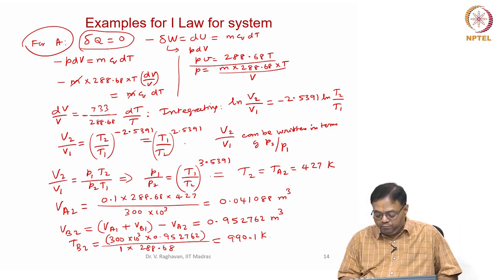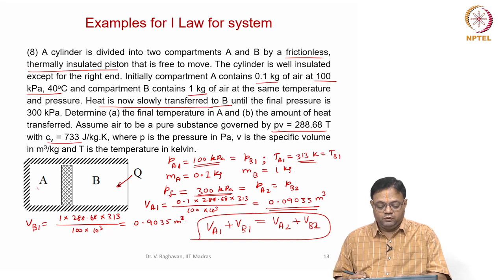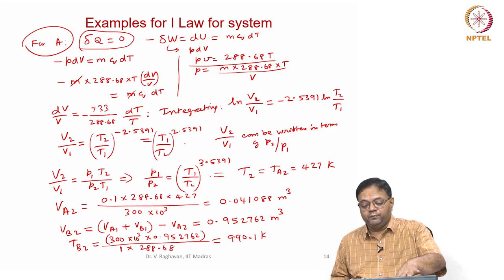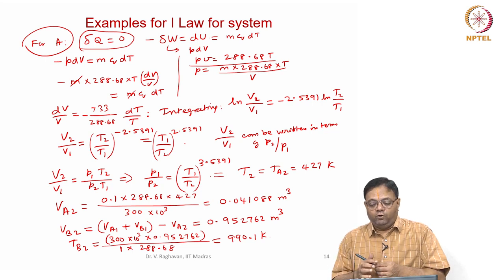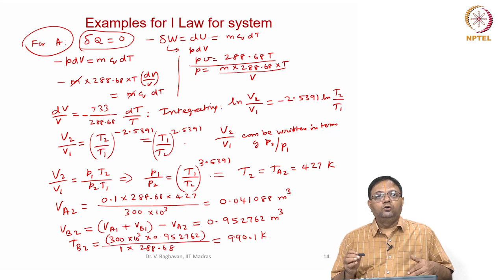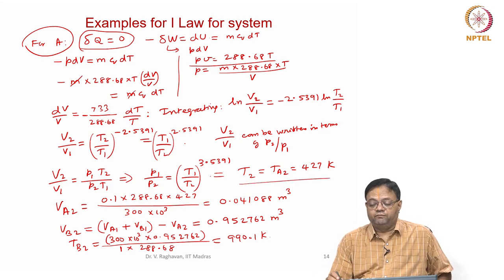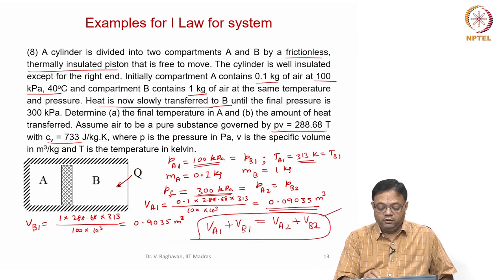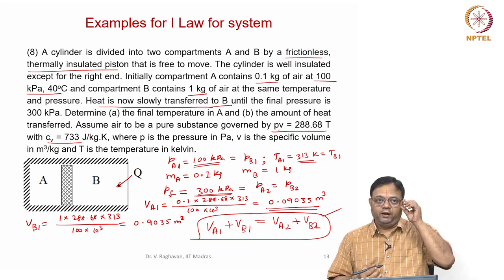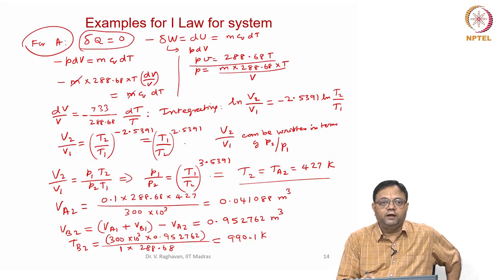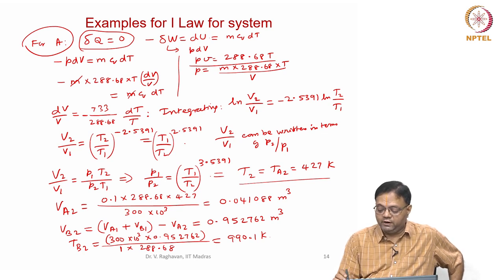To summarize the approach: adiabatic compression occurs in A, giving the final temperature and volume of A. Volume conservation then gives the final volume of B. Since the final pressure was known, the equation of state gives the final temperature of B. Pressure was the only property known for B, so one more property — Vb2 — was needed.